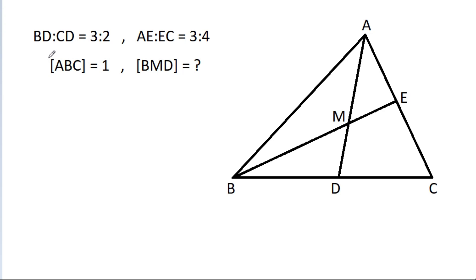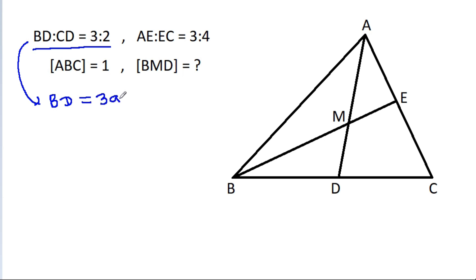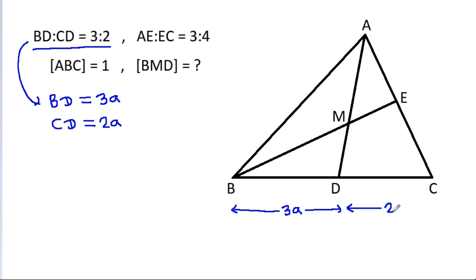In this video, we have been given that BD ratio of CD is equal to 3 ratio 2. That means, if BD is 3a, then CD it will be equal to 2a.